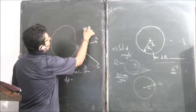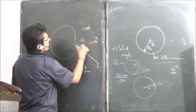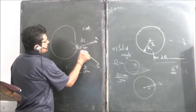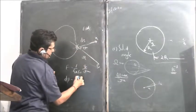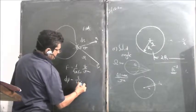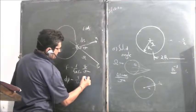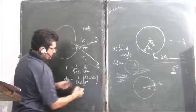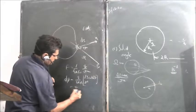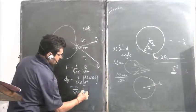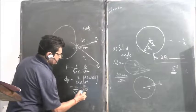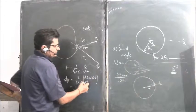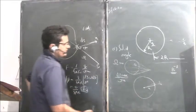And this dot product is the angle between the normal to the area and R. So it will be Q upon 4 pi epsilon naught R square dS cos theta, which equals Q upon 4 pi epsilon naught times the solid angle.